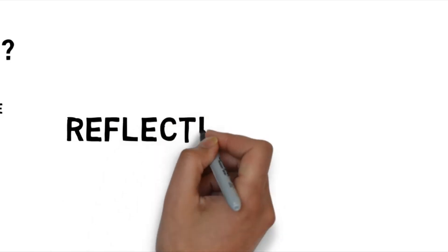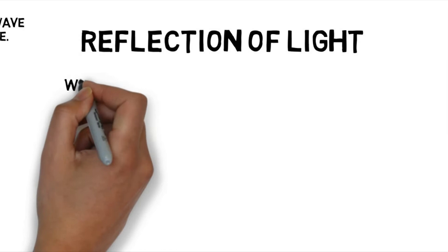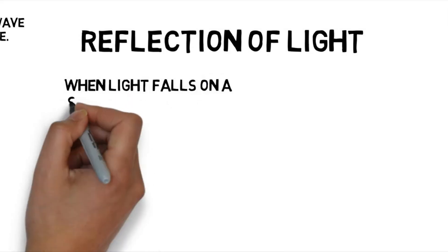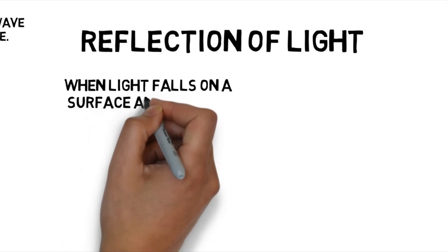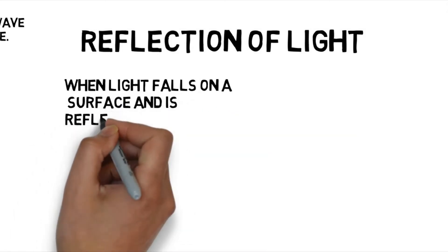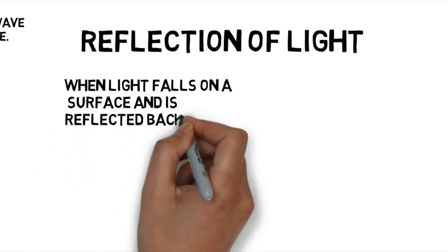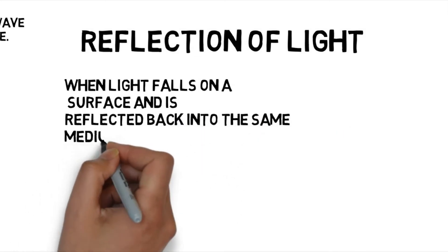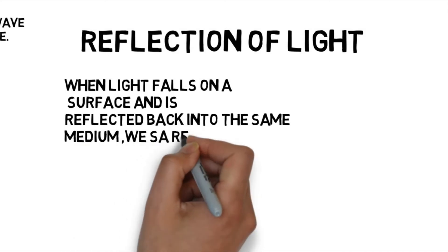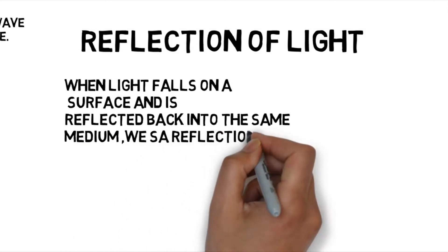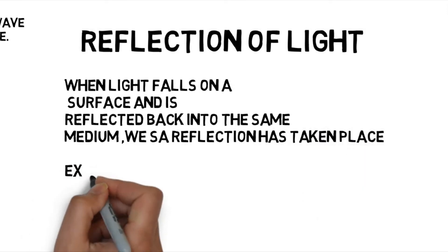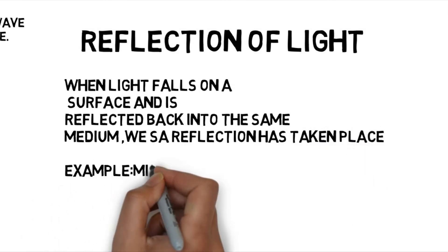Reflection of light: when light falls on a surface and is reflected back into the same medium, we say reflection takes place. An example of this is a mirror.